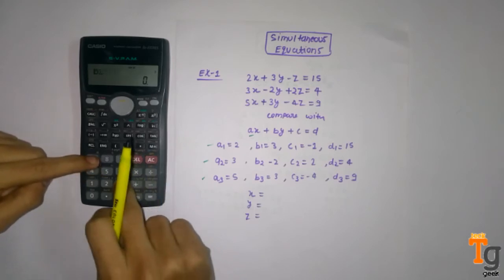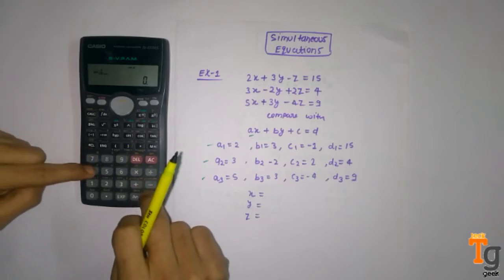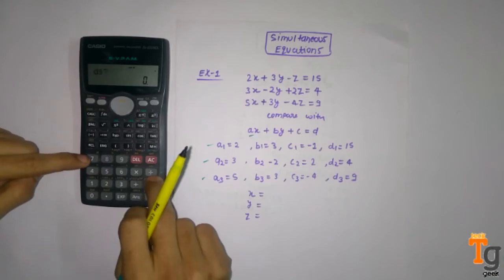For the third equation: a3 is 5, b3 is 3, c3 is minus 4, d3 is 9.